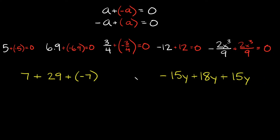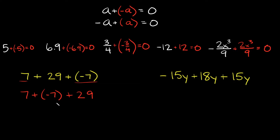Nothing too groundbreaking there, so let me show you a couple examples where this property is useful. Starting on the left — you should be able to see right away that 7 and negative 7 are opposites, so they add up to 0. I can rewrite this as 7 plus negative 7 plus 29. Since 7 and negative 7 cancel out to 0, all we're left with is 29. So 7 plus 29 plus negative 7 is simply equal to 29.